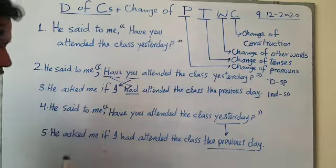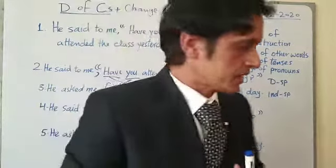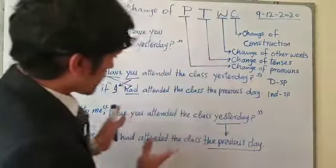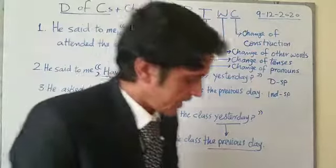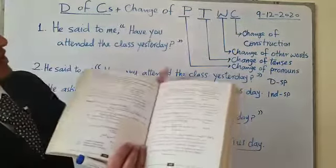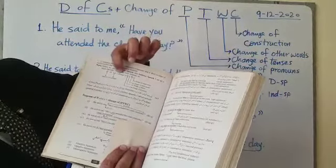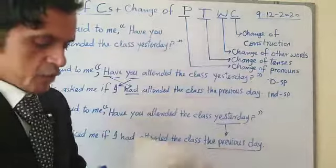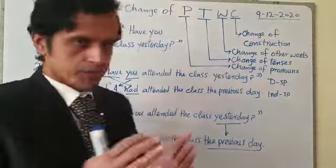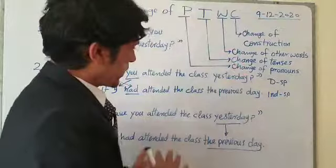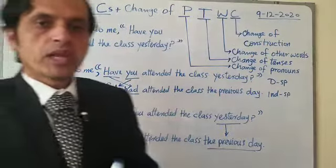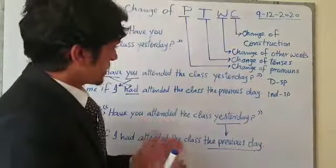This is a very short formula I created myself. I have neither copied this formula from somewhere nor learned it from someone — this is my own creation. You can find this formula only in my book: D of C's plus change of PTWC. You cannot find it anywhere else in the world. This is a very short and comprehensive formula. If you keep it in mind and apply all these steps whenever you want to change direct speech into indirect speech, you will never miss a point.